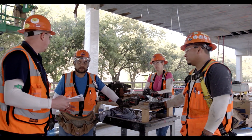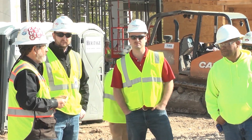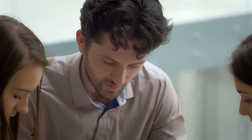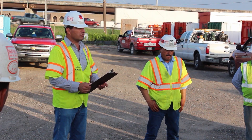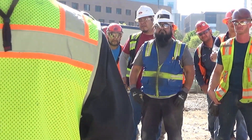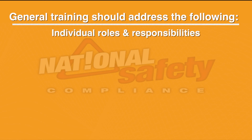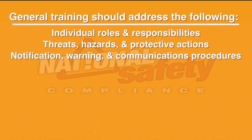Before implementing the Emergency Action Plan, employers must designate and train enough people to assist in the safe and orderly emergency evacuation of employees. Employers should review the plan with each employee when the initial plan is developed and when each employee is initially assigned to the job, when his or her actions or responsibilities under the plan change, or when the EAP plan changes. Effective plans often call for retraining employees annually and include drills in which employees can practice evacuating their workplace and gathering in the assembly area. General training should address the following: individual roles and responsibilities; threats, hazards, and protective actions; notification, warning, and communications procedures.